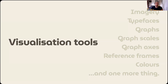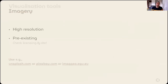To create science graphics, we need to know our visualization tools — and there are a few of them. These are: images, typefaces, graphs, graph scales and axes, reference frames, and colors. For images, try to use high-resolution ones. If you use pre-existing images, check the licensing and cite the sources. There is a lot of open-access imagery on the web. Useful sites are unsplash.com, pixabay.com, or for us very relevant is imageo.egu.eu, where you can also upload your own images.